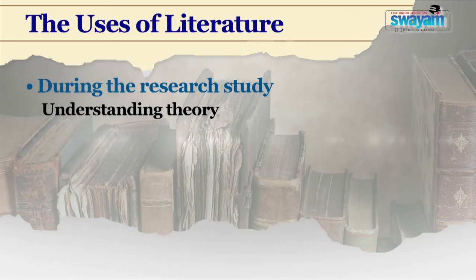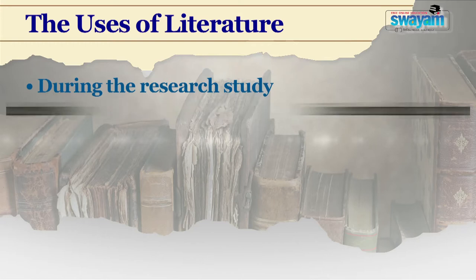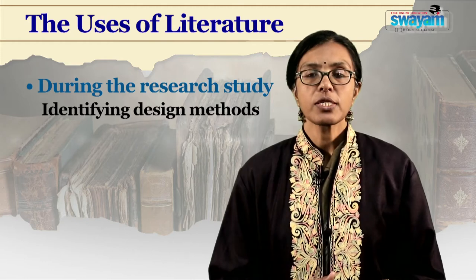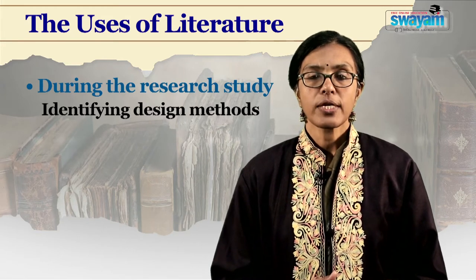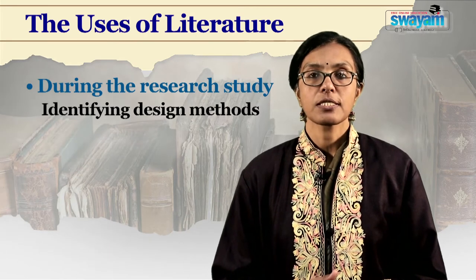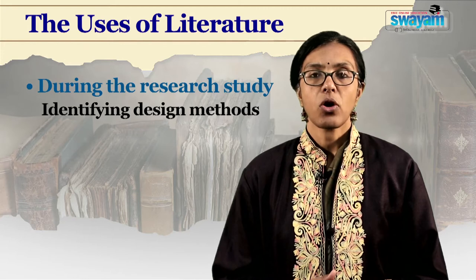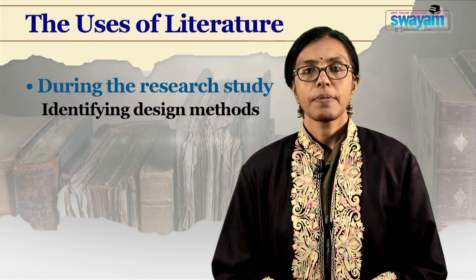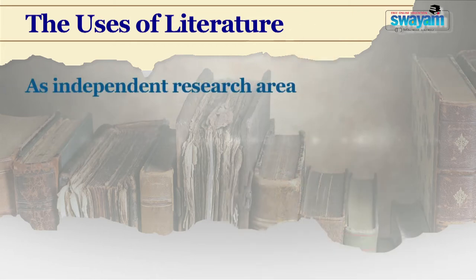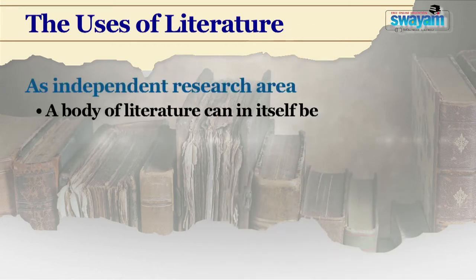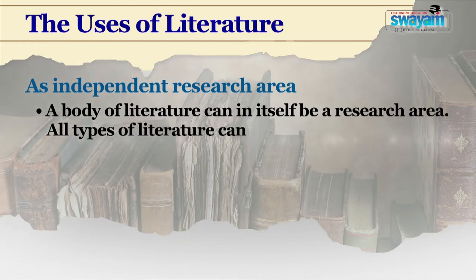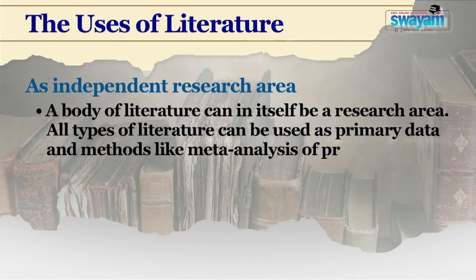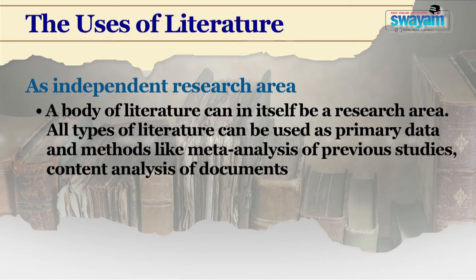Understanding theory: previous research publications are the source to understand the context or the frame in which to place the research topic, the main theories in the area, methodological approaches and assumptions. Identifying design methods: when we need to design research methods for our study, going through the existing literature we can learn about methods used by previous researchers, any flaws in the earlier methods, and standard or conventional techniques. We can also decide if there is a need to use non-conventional or alternative research designs. As an independent research area, a body of literature can in itself be a research area. All types of literature can be used as primary data and methods like meta-analysis of previous studies, content analysis of documents, etc., can be used to study them.